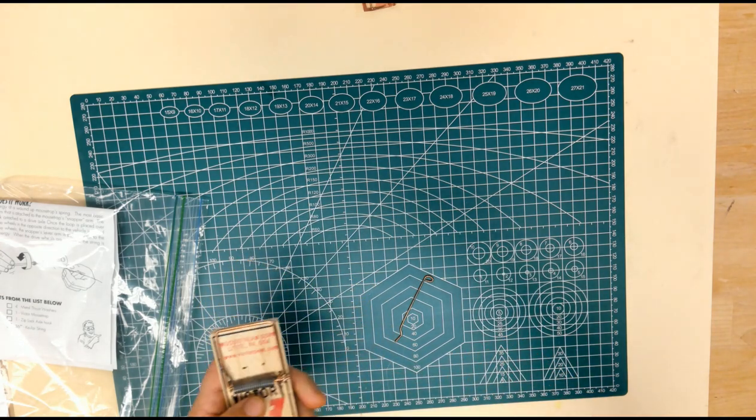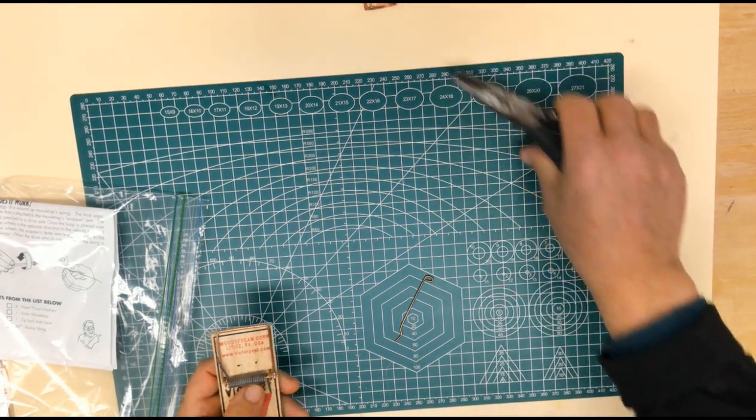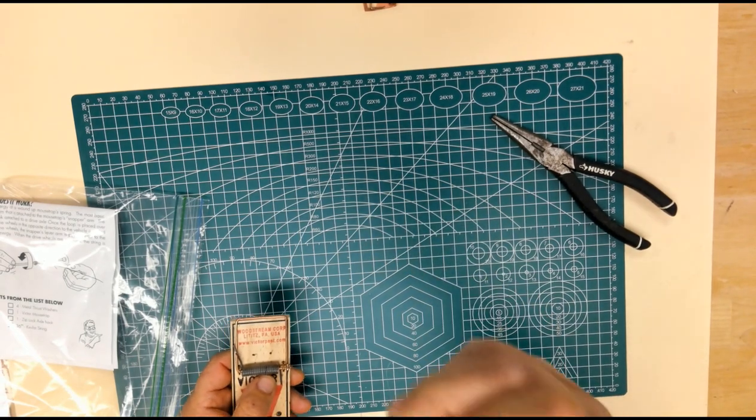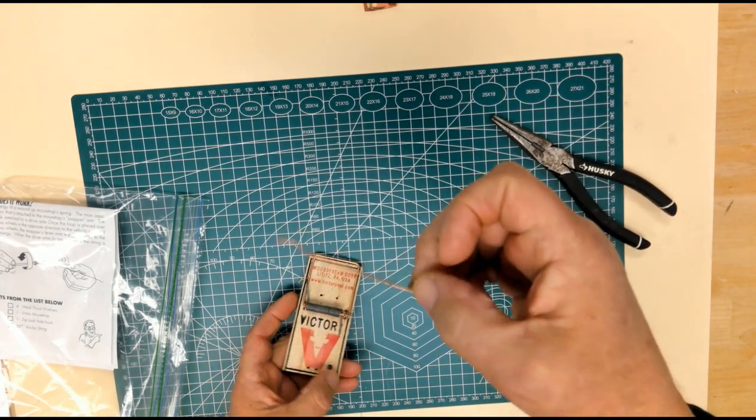And grab the other side and twist it. And you don't need the staple. That's trash. Set that to the side.